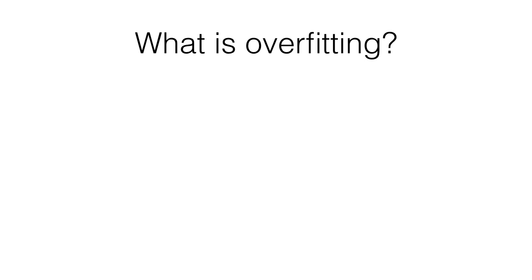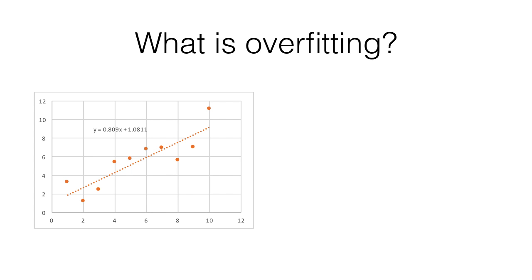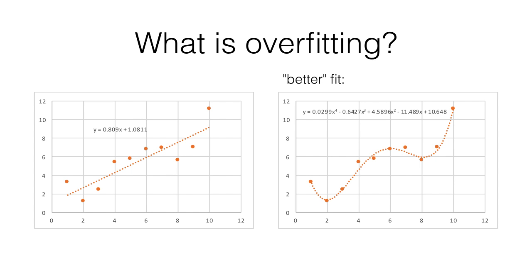Put simply, overfitting results from using a model that is too complex for the input data. In this example, I've generated data where each observation's y value is just equal to the x value plus some noise. The underlying relationship is linear, though we're observing the actual relationship with noise. To get a better fit to the data, we can make the model more complicated, and that's reflected by the polynomial fit with more terms.